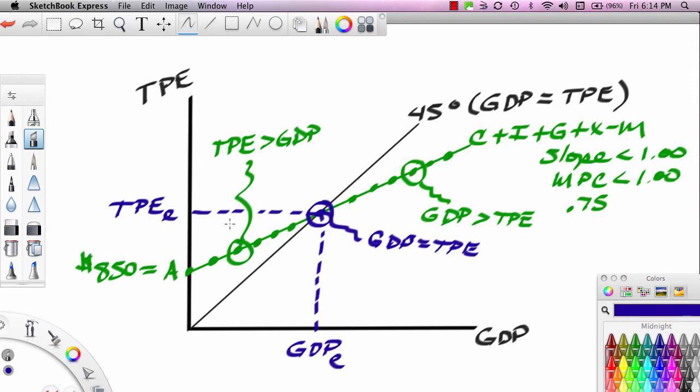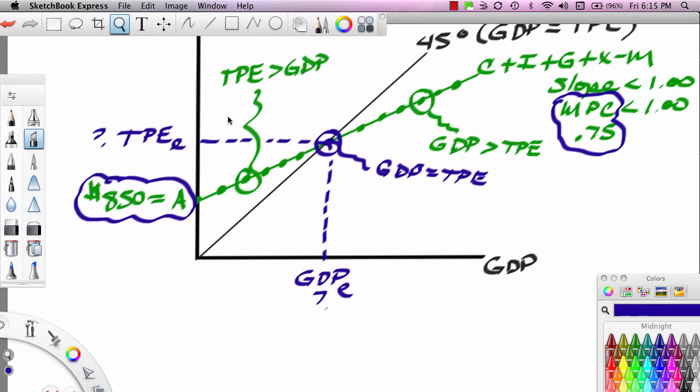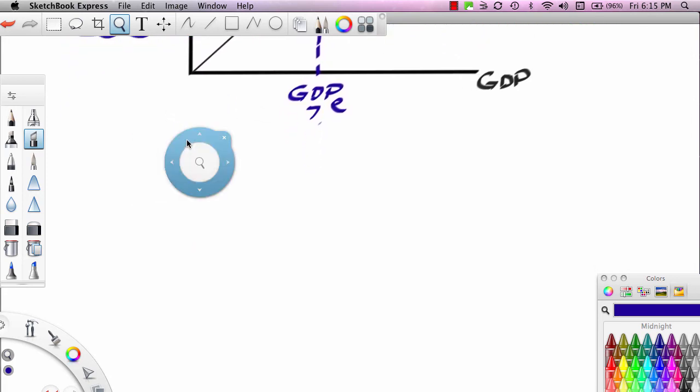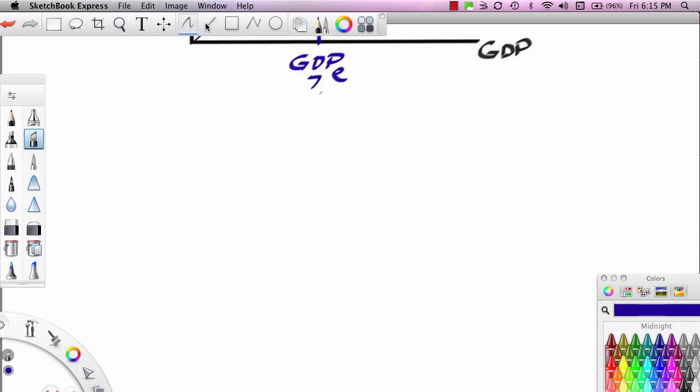Now, the fun begins. We can actually calculate these amounts. If we have A, and we do, if we have A, and we have MPC, we can actually calculate equilibrium GDP and equilibrium TPE. Let's do it. So I'm going to scroll down. I'm going to do the calculations. And then I'm going to come back up, and I'm going to actually put those numbers on our expenditure line.